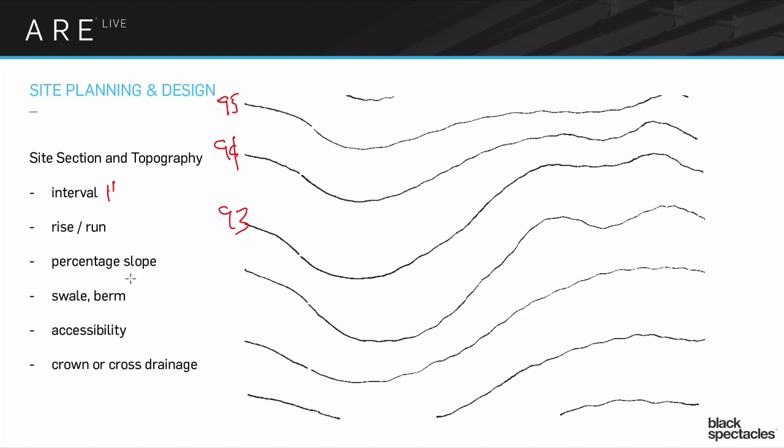One of the ways that they're going to talk about slope is by using a percentage term. So if something says that there's a 20% slope maximum, then you have to think about that as 20 feet vertical compared to 100 feet horizontal.